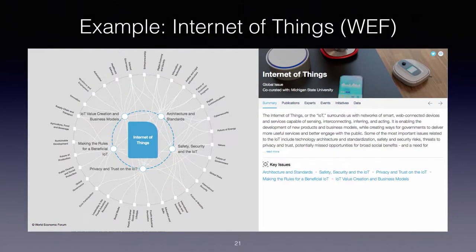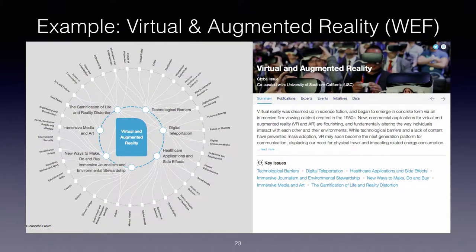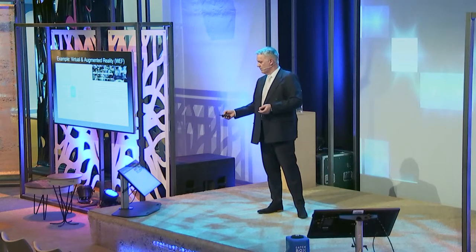This is an example of digital communications — you can see what the impact of digital communications will be. Other examples include the future of production, information technology, Internet of Things, social media, and virtual and augmented reality. You can see all the relationships from those container disruptions and key issues. I would really advise you to look at that.